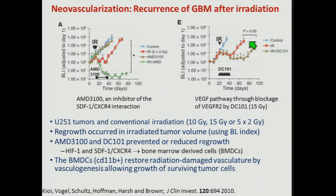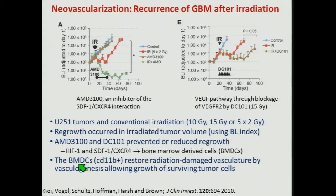A similar study with control animals: radiation this time with a single dose of 15 gray shows a large tumor growth delay, but eventually it grows at the same rate. A secondary compound — DC101, an inhibitor of the VEGF signaling pathway which is hypoxic-mediated — showed a longer growth delay. By inhibiting hypoxic-mediated signaling that drives neovascularization, you can address tumor regrowth and recurrence in glioma. These two compounds were preventing the recruitment of CD11B-positive bone marrow-derived cells, circulating in the blood system, arriving at the tumor, driving the formation of new vessels, which permitted tumor regrowth.